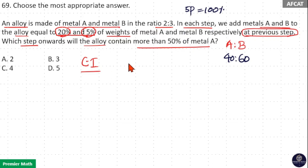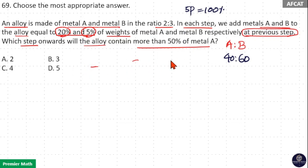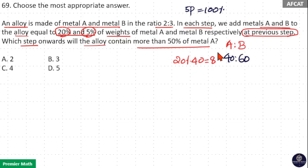Instead of compound interest, I will calculate simple interest and amount — this allows us to solve faster. The rate of interest is 20% and 5%. For A: 20% of principal 40 is equal to 8. For B: 5% of principal 60 is equal to 3, since 10% of 60 is 6, so 5% is 3.